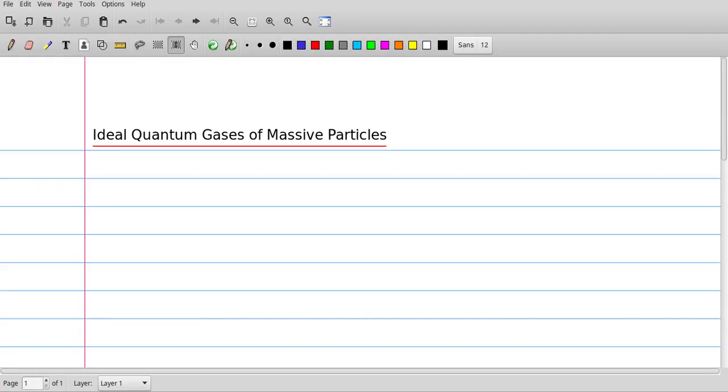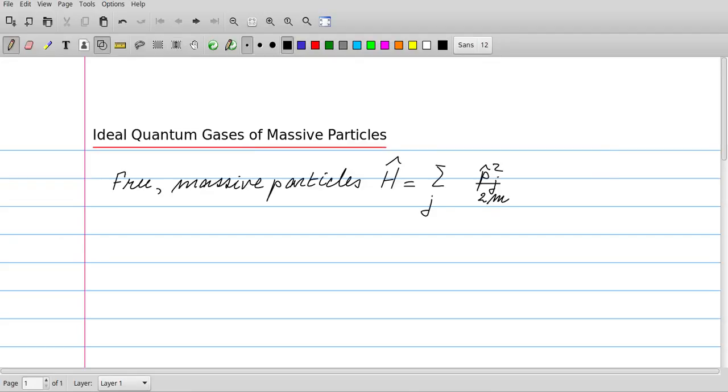We consider ideal quantum gases consisting of massive particles. Massless particles would be photons or phonons, but here we just consider particles which have a mass. The Hamiltonian of a system consisting of massive particles is just the sum of the kinetic energy over the particles. If we have n particles, j runs from 1 to n, where n is the number of particles.